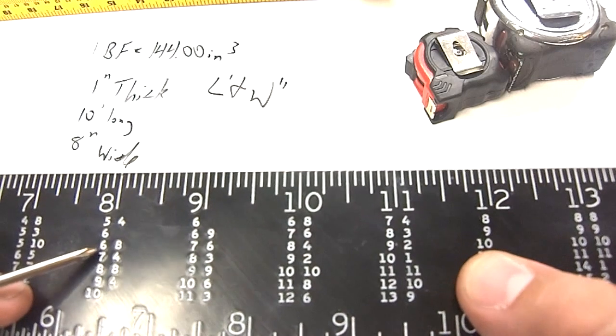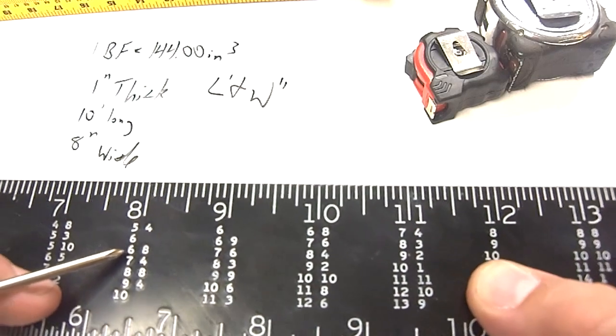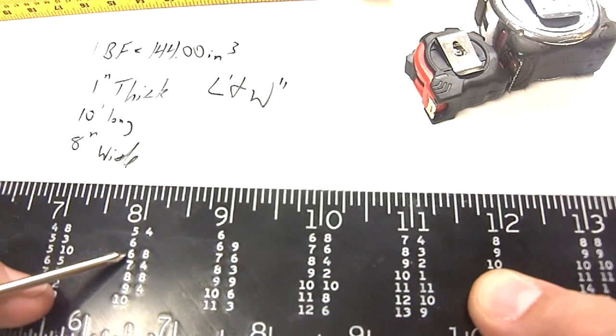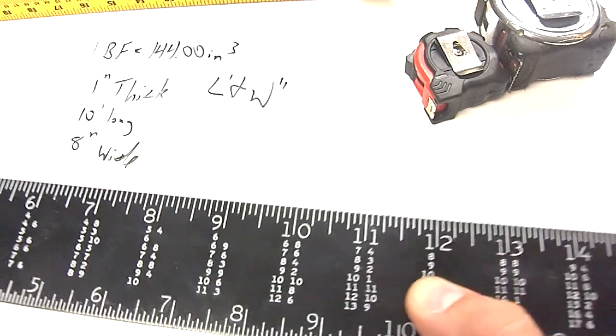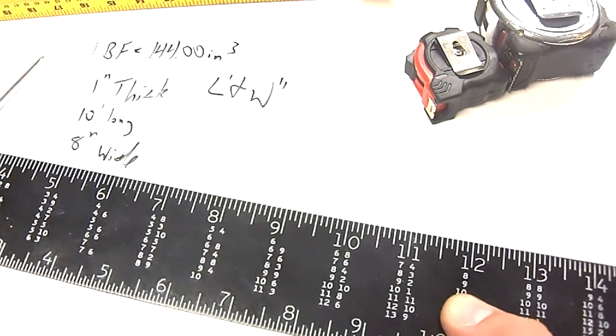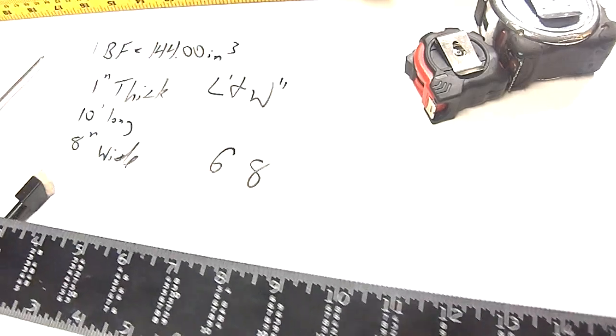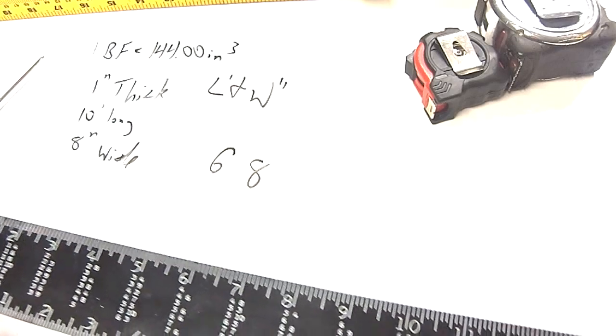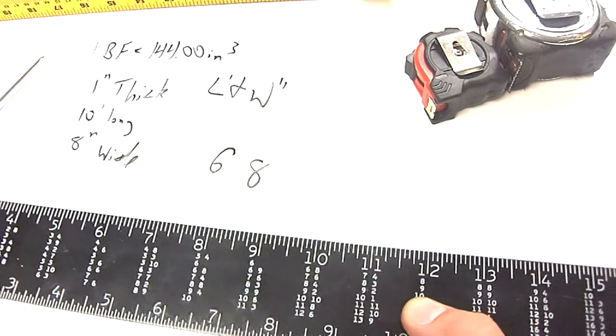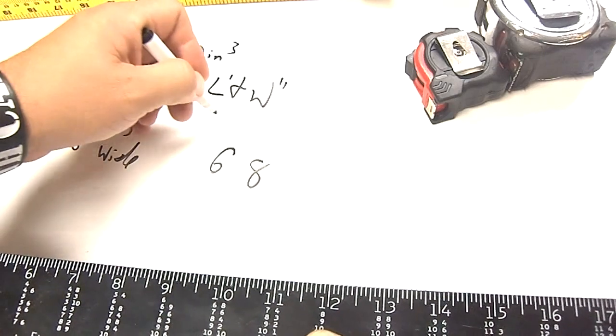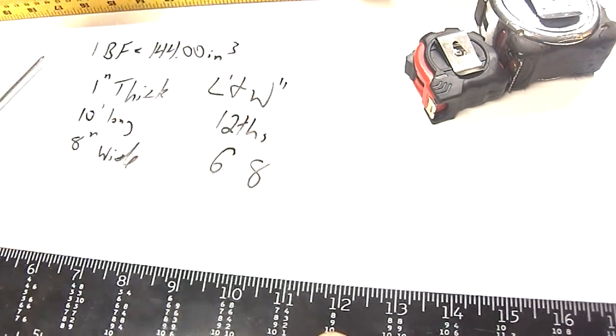See where it is? 8, 9, 10, right there. And then over here, 1, 2, 3, we have 6, 8. Now, something else that's a little bit crazy about this scale is it breaks everything down into 12ths.